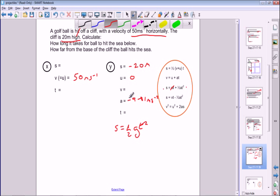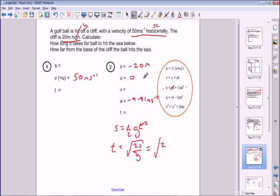We can rearrange that, which will give us t is equal to the square root of 2s over g. Let's substitute some numbers. That's the square root of 2 times the displacement, which is minus 20, over the acceleration g, which is minus 9.81. You can see how important the signs are here, because if you didn't get both of those signs right, you're going to end up with the square root of a negative number, which is not possible to calculate.